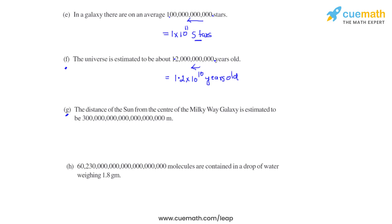Coming to part G, it says the distance of the Sun from the center of the Milky Way galaxy is estimated to be such a huge number in meters. The decimal is here, and counting by how many places we have to move it towards left so that it is between 3 and 0, we get 20. So the decimal is to be moved towards left by 20 places, giving the answer as 3 × 10²⁰ meters, which is the standard form of the distance between the Sun and the center of the Milky Way galaxy.